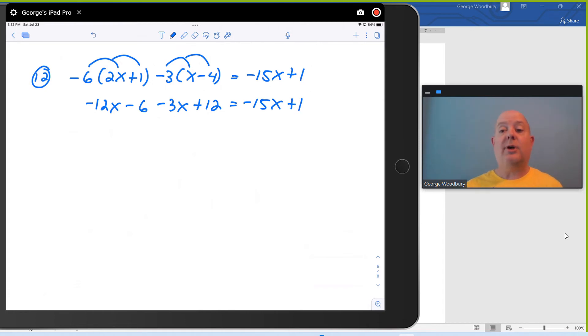Time to combine some like terms on the left-hand side of the equation. I've got a negative 12x and a negative 3x. Those combine to be negative 15x. Negative 6 plus 12 on the left side, two like terms there. Negative 6 plus 12 is a positive 6. So I write plus 6 and that's equal to negative 15x plus 1. So this is telling me that negative 15x plus 6 is the same as negative 15x plus 1. The same number, adding 6 and 1 gives me the same answer. That seems a little fishy.